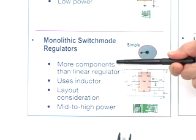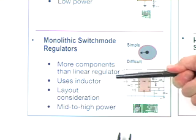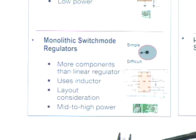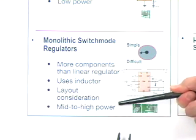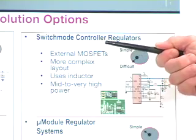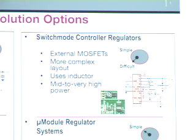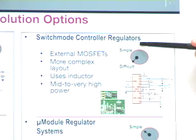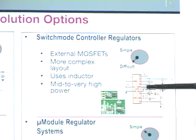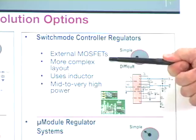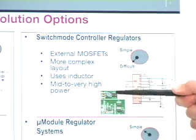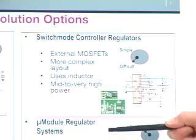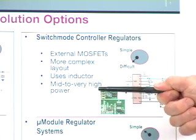The monolithic switch mode regulator has more components than the linear regulator, uses an inductor, has critical layout considerations since it is indeed a switch mode regulator, and is used for medium to high power applications. For even higher power applications, we move into the right quadrant with switch mode control regulator ICs in the form of discrete circuits. These designs require external MOSFETs, a more complex layout, an external inductor, and are used for mid to very high power applications.